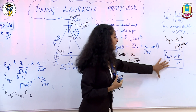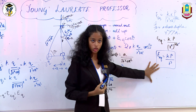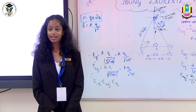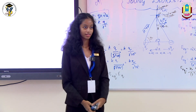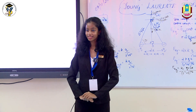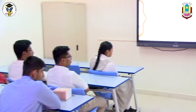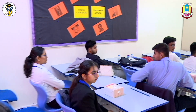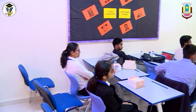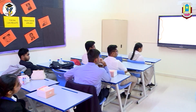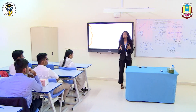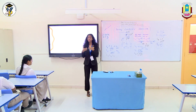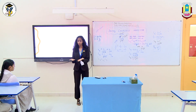A student asks: the total charge of a dipole is zero, so why is the electric field produced non-zero? The answer is: although the net charge is zero, there are still two separate charges present. At the equatorial point, the cosine components of the electric field from each charge both point in the same direction and add up, resulting in a non-zero net electric field.